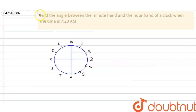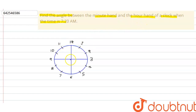Hello everyone, so our question is: find the angle between the minute hand and the hour hand of the clock when the time is 7:20 AM. Now, we have a clock here, and the hour hand is at 7 — this is the hour hand.